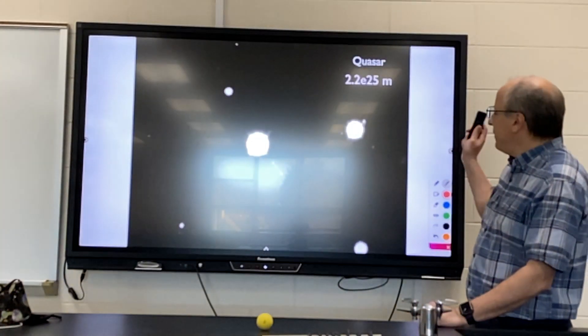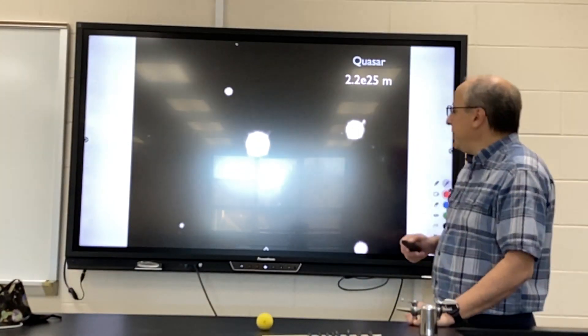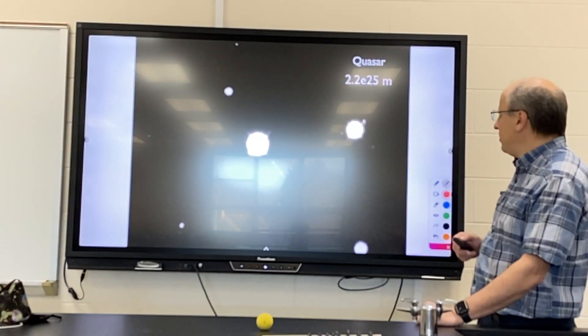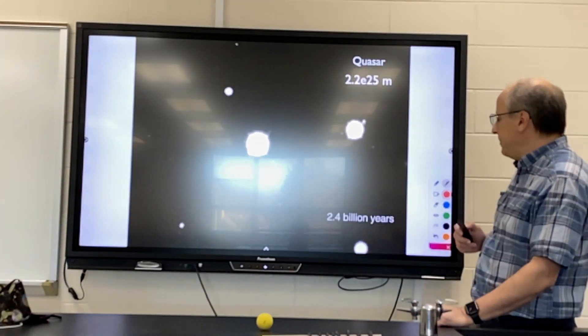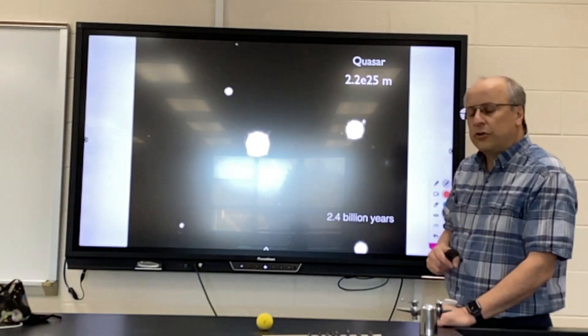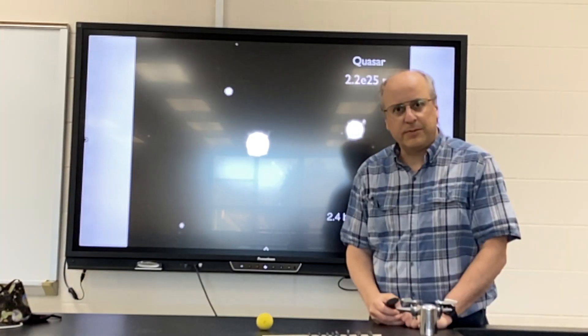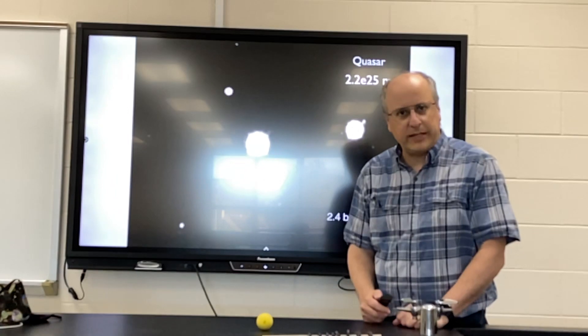And then some of the farthest objects away are quasars. And when you figure out how long ago they gave off their light, it's almost 2.4 billion years ago or farther, depending on which quasar you are looking at.